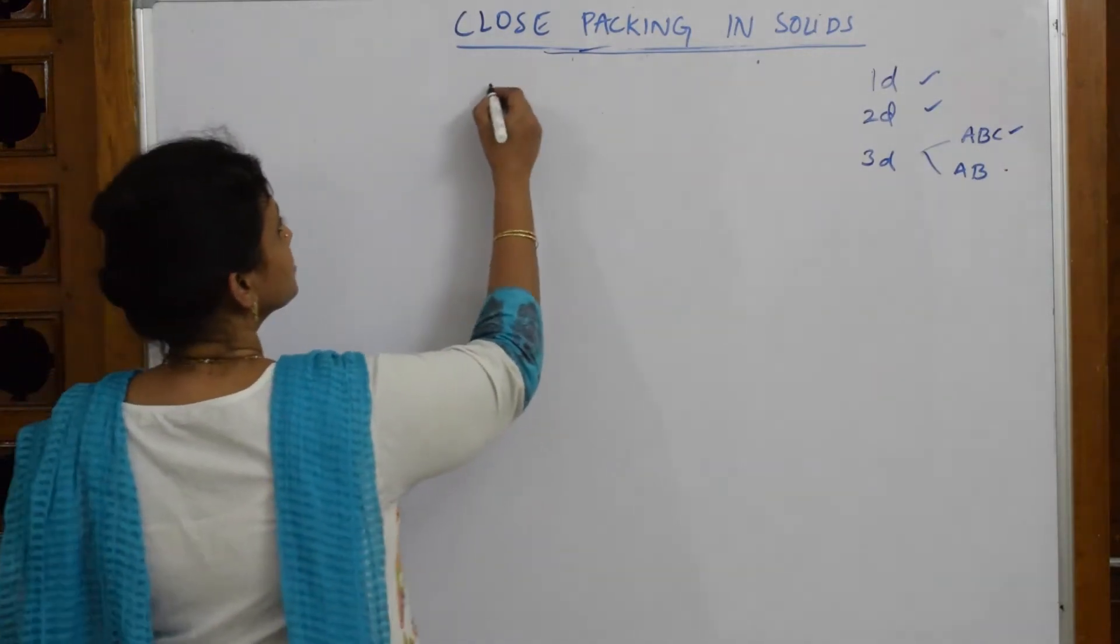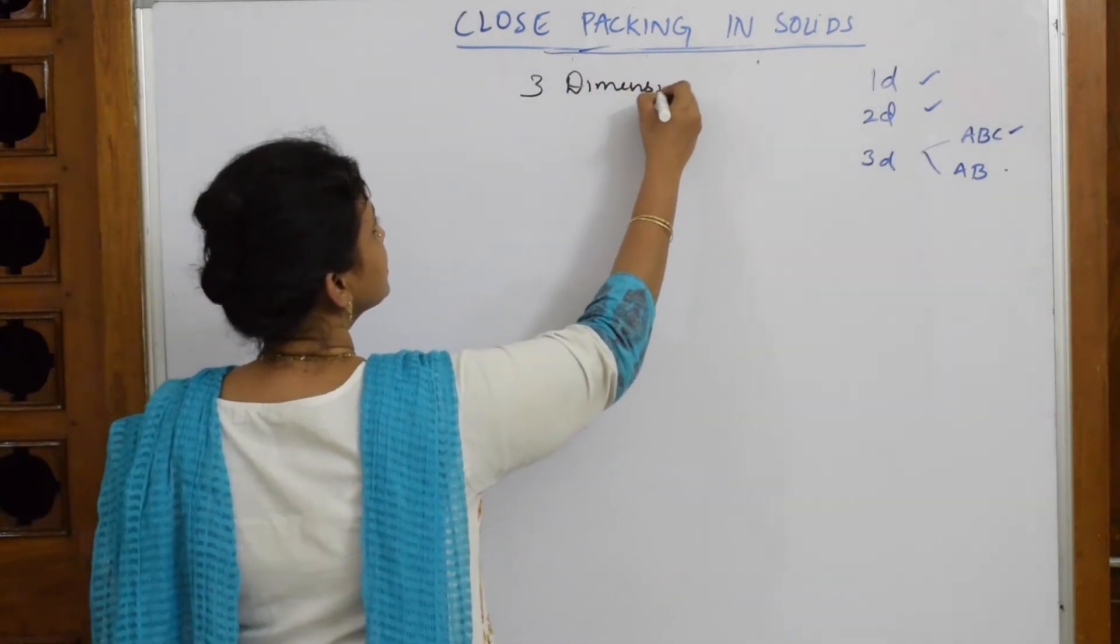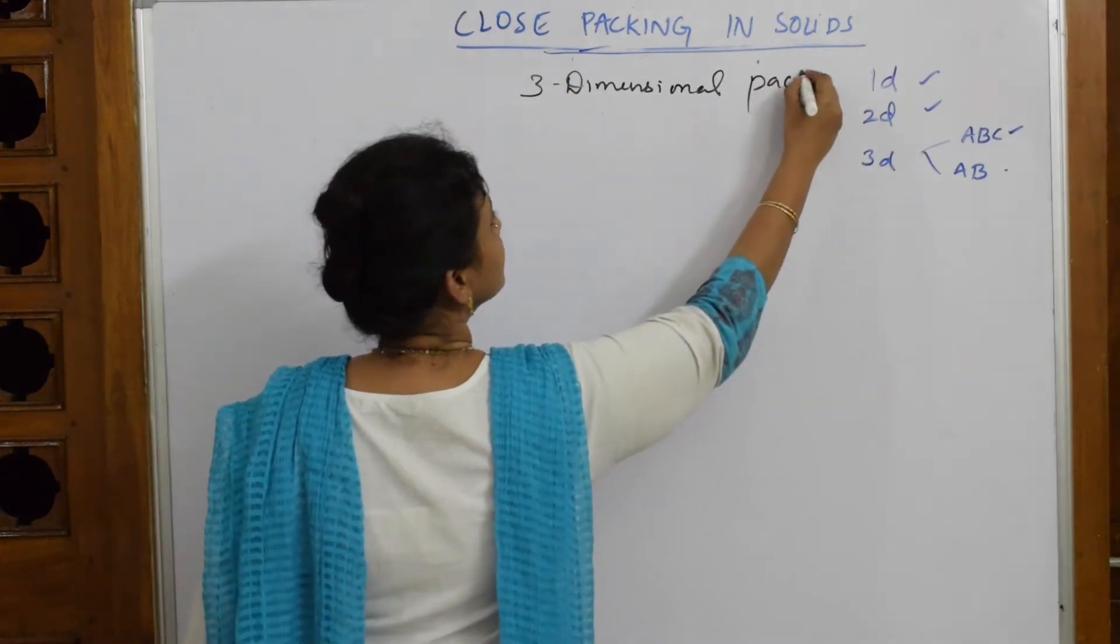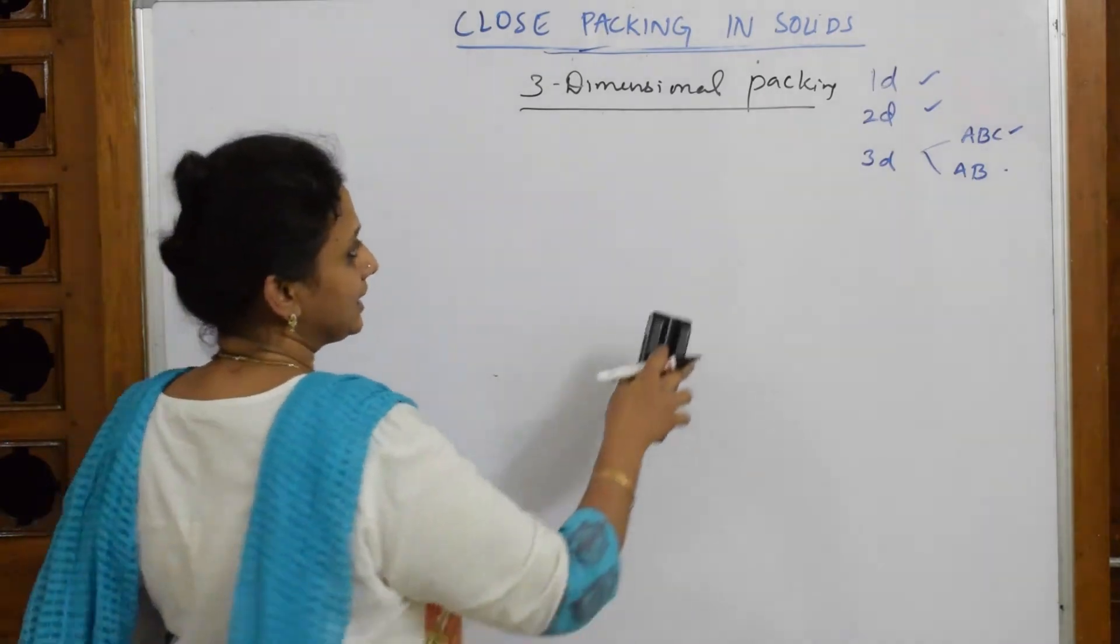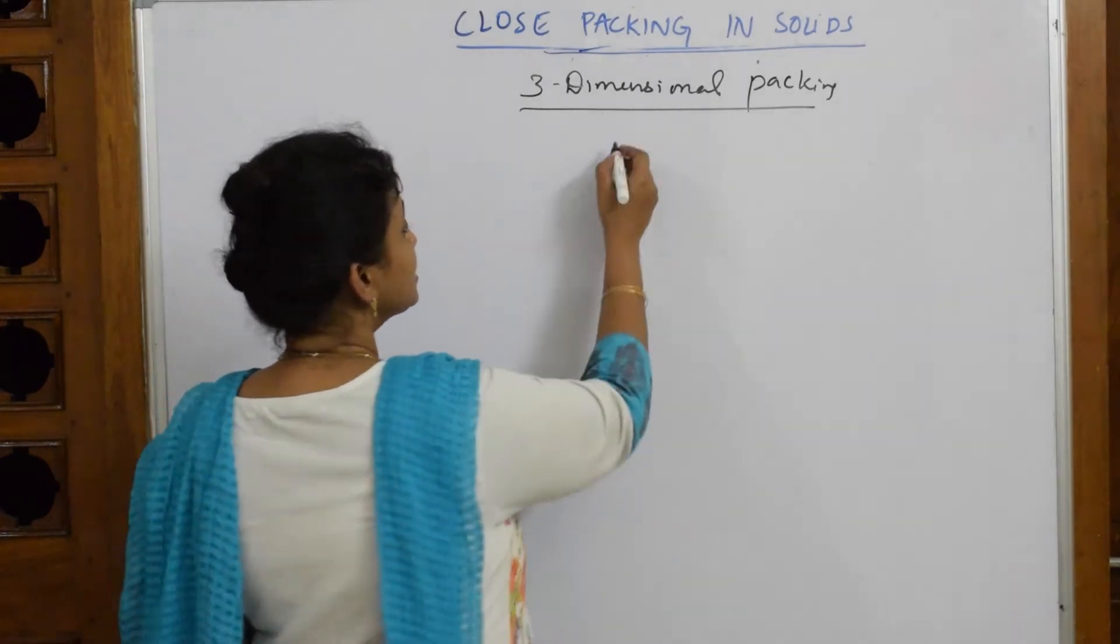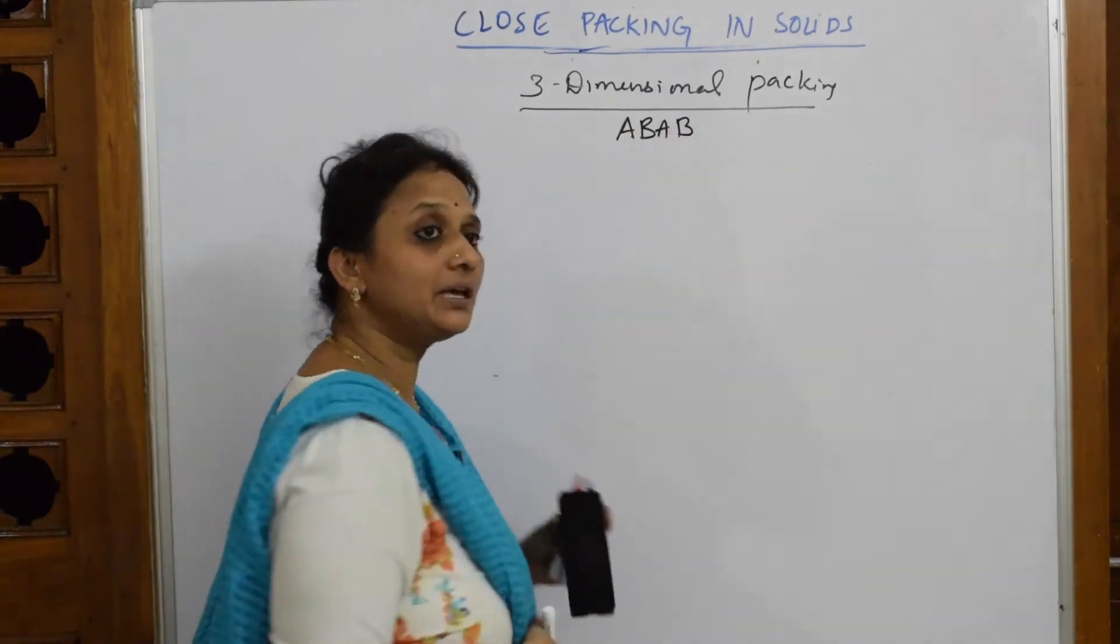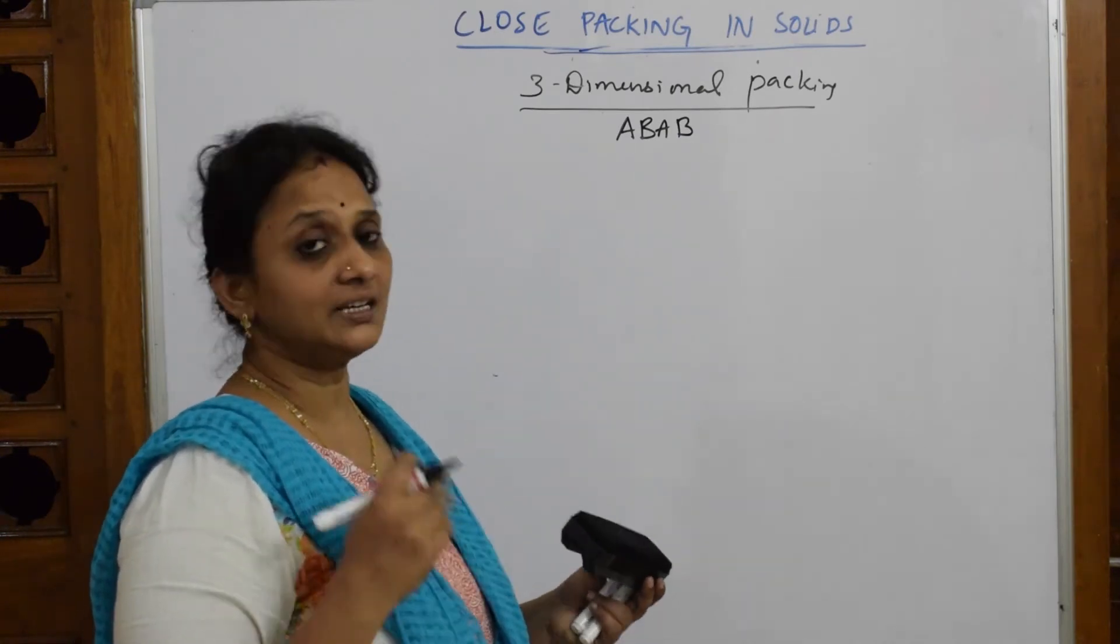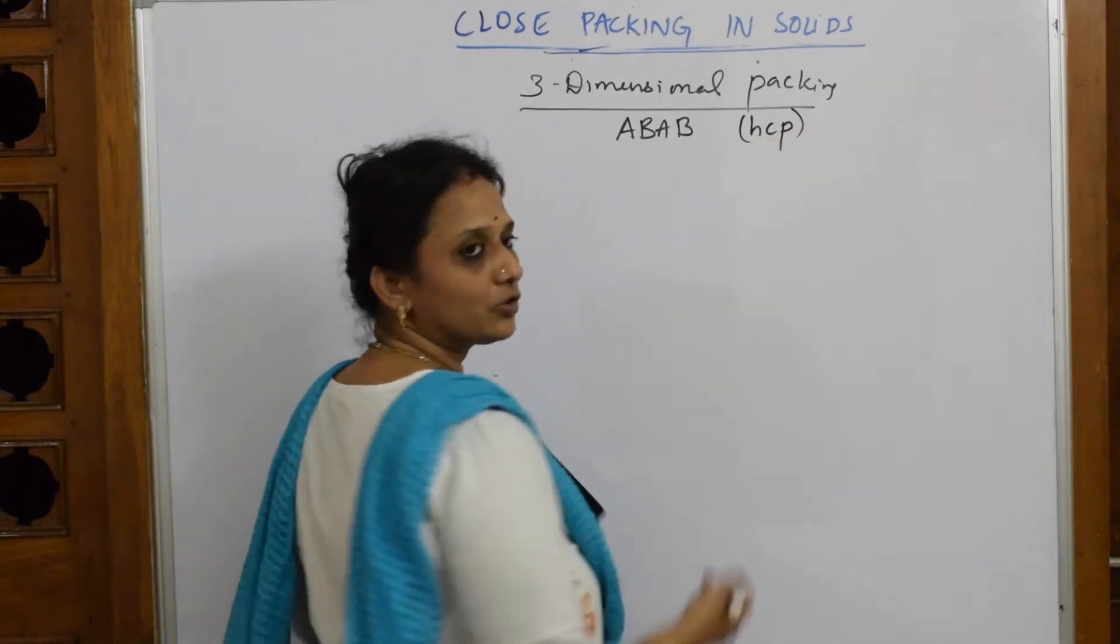Close packing in three-dimensional cubic crystals - observe carefully, three-dimensional packing. When I speak about three-dimensional packing, the name given is ABAB packing. Remember: ABC is observed in FCC, ABAB is observed in HCP. Now let me draw HCP packing.